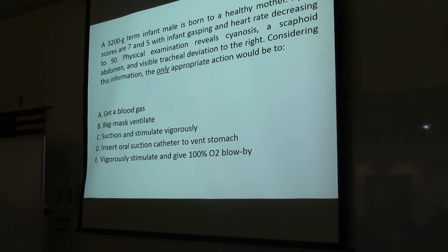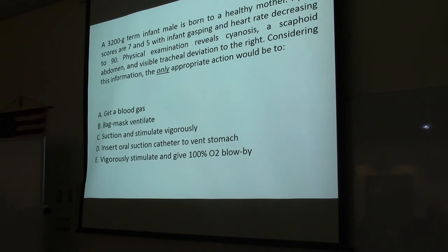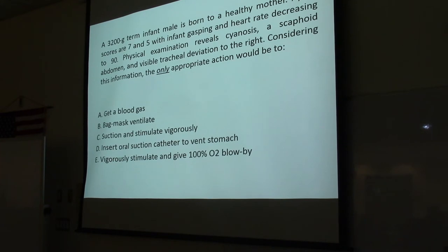A 3,200 gram term male infant is born to a healthy mother. Apgar scores are seven and five. The infant is gasping, heart rate is decreasing to 90, and physical examination reveals cyanosis and a scaphoid abdomen — meaning the abdomen is concave or caved in, because the intestines are up in the thorax. There is also visible tracheal deviation to the right, which makes sense because a lot of air or mass on the left side will push everything over to the right.